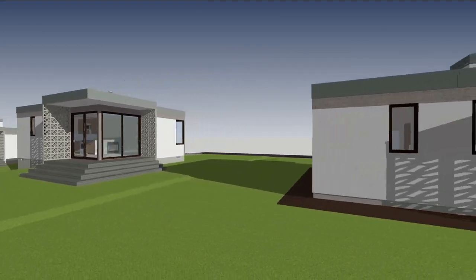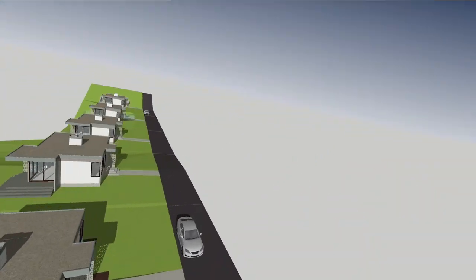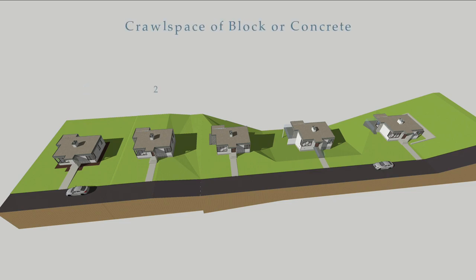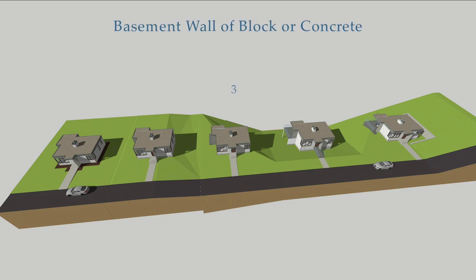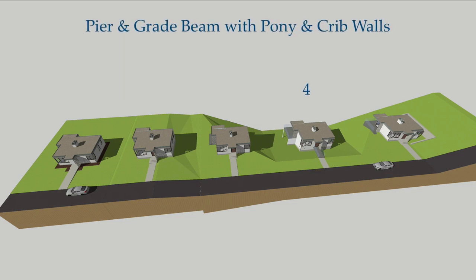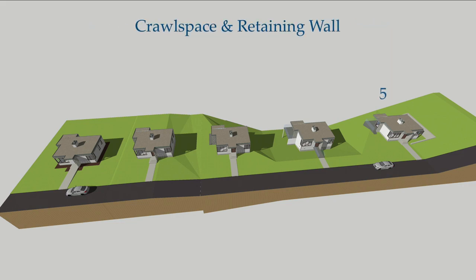For this presentation, we will grasp the basics of each type. In subsequent videos, we will look at specific elements of these five foundation types: one, concrete slab on grade; two, crawl space with formed concrete or concrete block footings; three, subterranean basement walls of formed concrete or concrete blocks; four, pier and grade beam with pony and crib walls; five, crawl space with retaining walls.